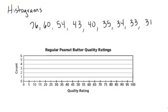Let's start this histogram — a regular histogram with a count on the side for regular peanut butter quality ratings. I have my intervals down here going by 5, and I just need to figure out where to put these numbers.